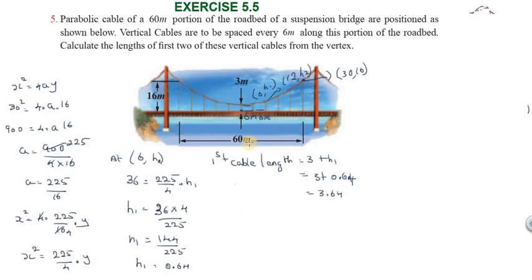For the second cable at 12 comma h2, the total distance is 12. We substitute the value: 12 square is 144, equal to 225 by 4 into h2.